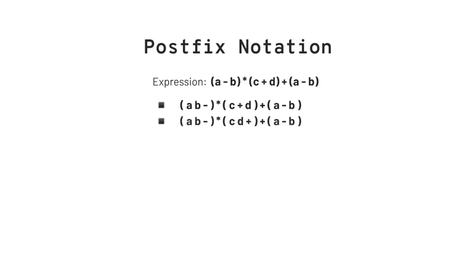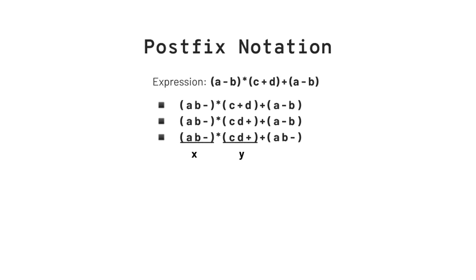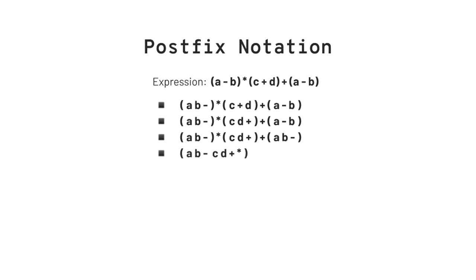Then we write the expression as it is. The third parenthesis contains operands a and b with an operator minus. To make it postfix, we write 'a b minus'. Now to lessen the difficulty, let us work with the first two parentheses and assume the first one to be x and the second one to be y. We get the expression x * y, which in postfix form will be 'x y star'. The expression becomes 'a b minus, c d plus, star'.